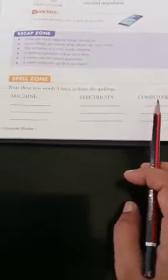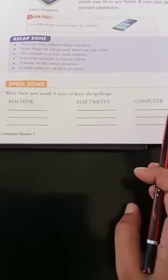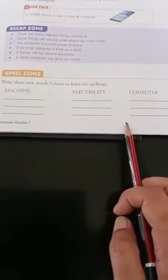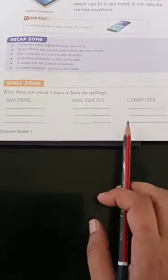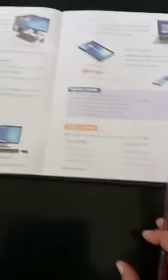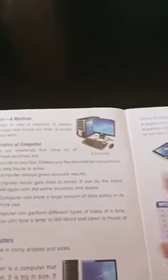Computer. C-O-M-P-U-T-E-R. Computer. You will have to write here three times. Children, do this in your book as homework. Learn the spellings.